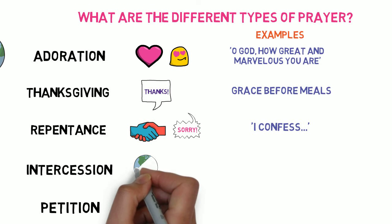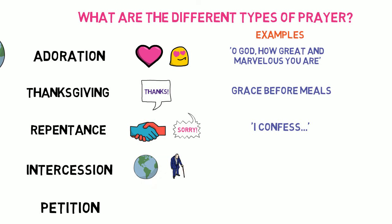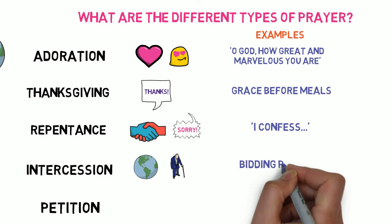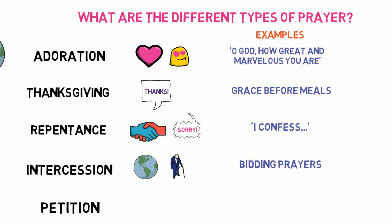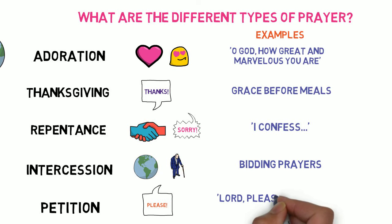Fourth, Intercession — asking for God's help for others, for example the bidding prayers which are said in the Mass during the Liturgy of the Word. And finally, we have Petition, which is asking God's help for oneself — for example, 'Lord, please help me to work hard for my exams.'